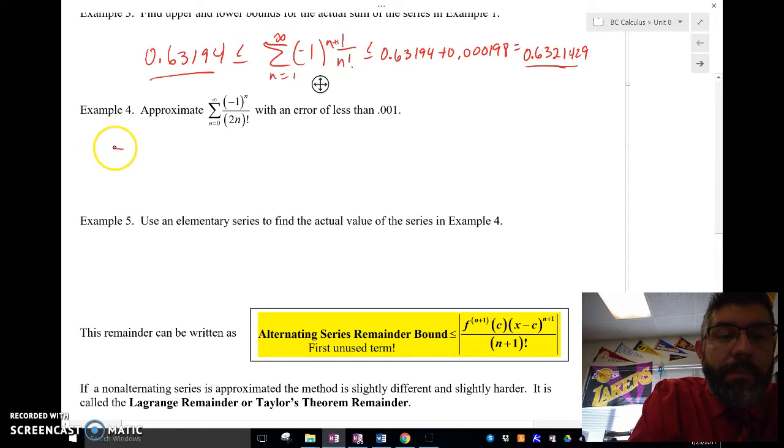So I'm going to go ahead and write this guy out. Write a few of these guys out. My first term is going to be 1, n equals 0. I'm using 0. Plug 0 in.